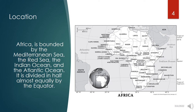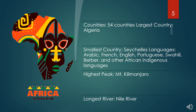Africa, the second largest continent, is bounded by the Mediterranean Sea, the Red Sea, the Indian Ocean, and the Atlantic Ocean. It is divided in half almost equally by the equator. Africa has 54 countries with Algeria as the largest. The smallest country is Seychelles. Some languages spoken in the continent are Arabic, French, English, Portuguese, Swahili, Berber, and other African indigenous languages.